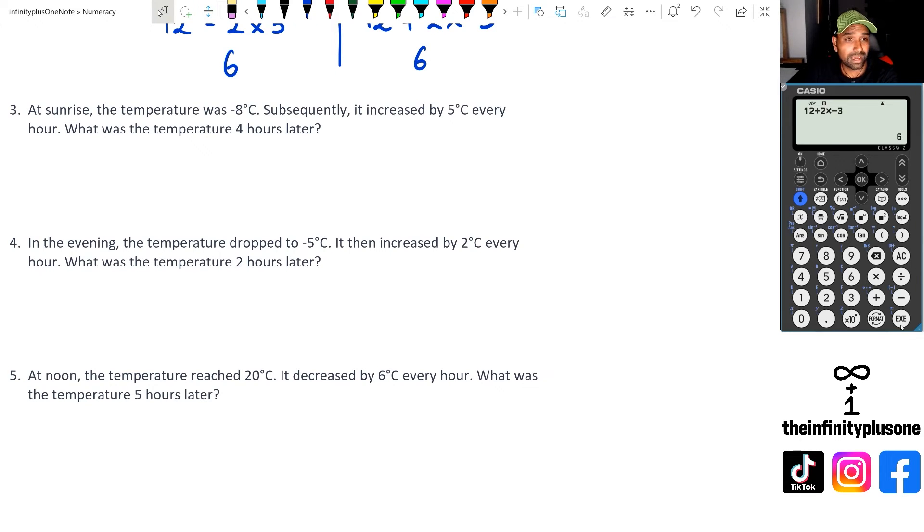That was a very quick pause, but hopefully you had a chance to actually go through the questions. So what we got? Question three: the temperature was minus eight degrees. Here we go, we're going to start with minus eight degrees. Now it increased by five degrees every hour. Now if it's increasing, that's plus five.